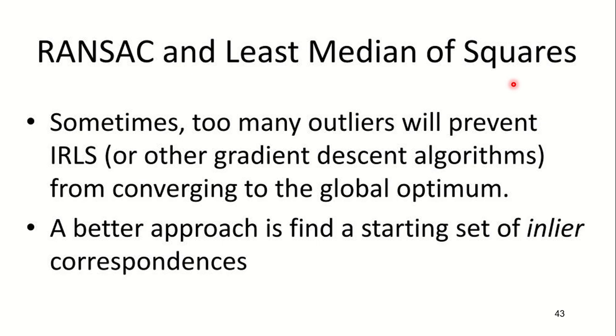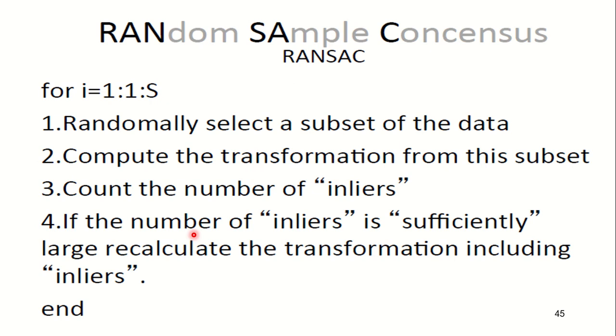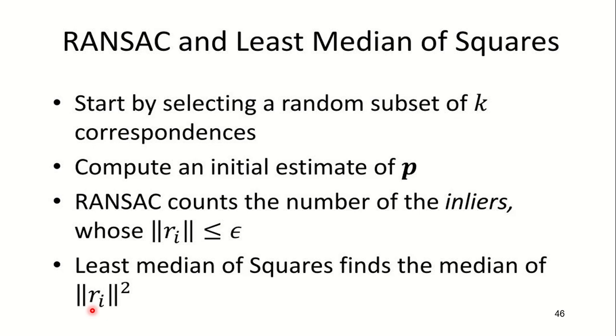RANSAC and least median of squares. Sometimes too many outliers will be preventing the IRLS algorithm to converge easily to the global optimum. A better approach is to find a starting set of inlier correspondences. RANSAC is the abbreviation of Random Sample Consensus, and the other method we use is the least median of squares. In the RANSAC method, we use the variable i from 1 to S, which is the total number of samples. You randomly select a subset of the total data, compute the transformation from this subset, and you count the number of inliers. If the number of inliers is sufficiently large, then recalculate the transformation including the inliers.